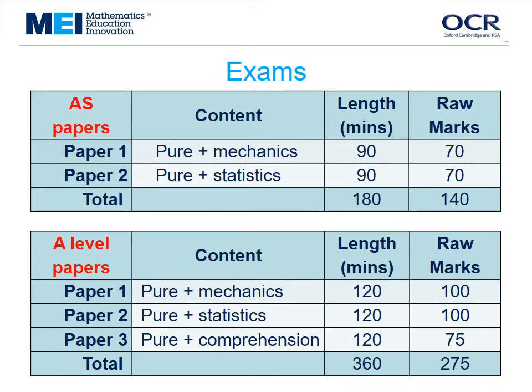Here are some details about the exam papers, AS and A level. Coursework is not allowed. So we have two 90-minute papers for AS, and three two-hour papers for A level. The next few slides explain some of the features of the exams and answer some of the questions which teachers ask us.